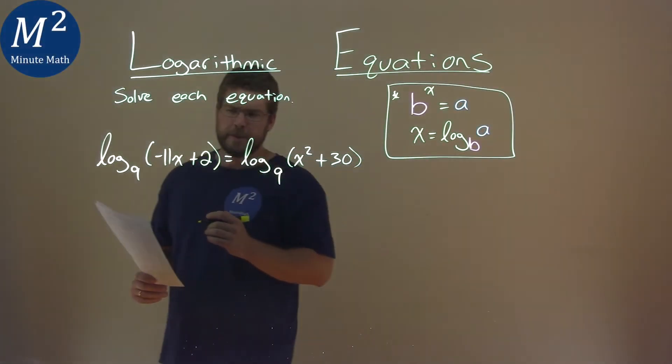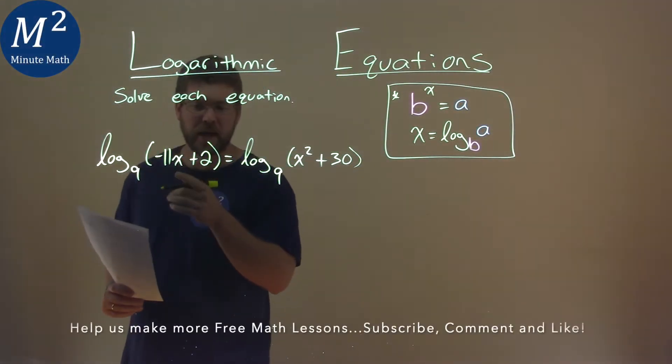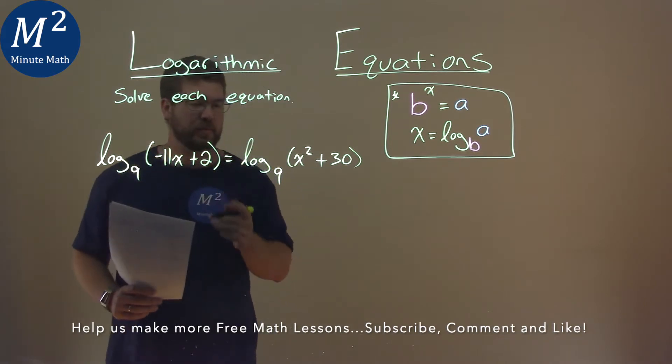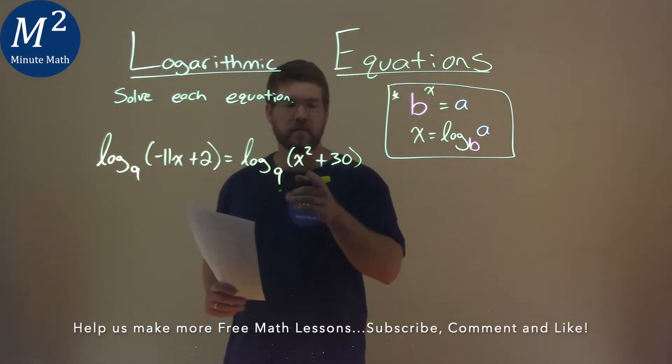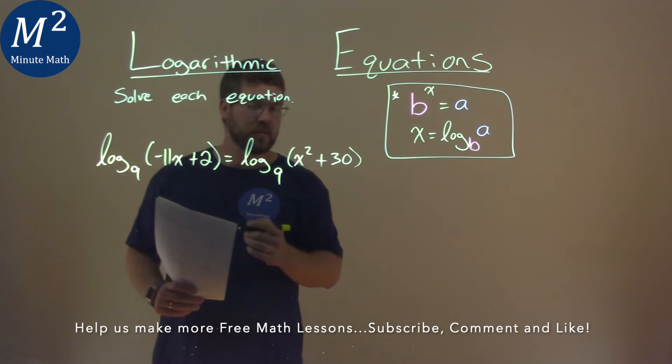We're given this problem right here. Log base 9 of negative 11x plus 2 is equal to log base 9 of x squared plus 30, and we need to solve this equation.